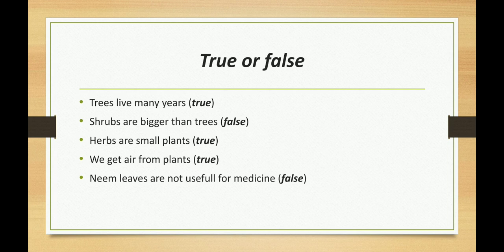Third one: Herbs are small plants. Yes, children. Whether herbs are small plants? Yes, the herbs are small plants with a soft green stem. Then it is true. Next, fourth one: We get air from plants. Yes, we get air from plants. Then it is true.